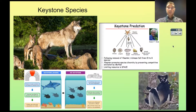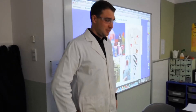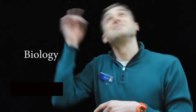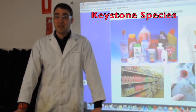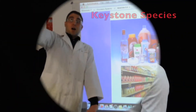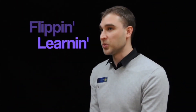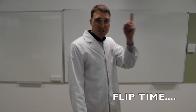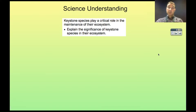Howdy, today I'm Flipping Science. We're talking about Keystone Species. The science concept we're going to look at is that Keystone Species play a critical role in the maintenance of an ecosystem, explaining the significance of Keystone Species in their ecosystem.